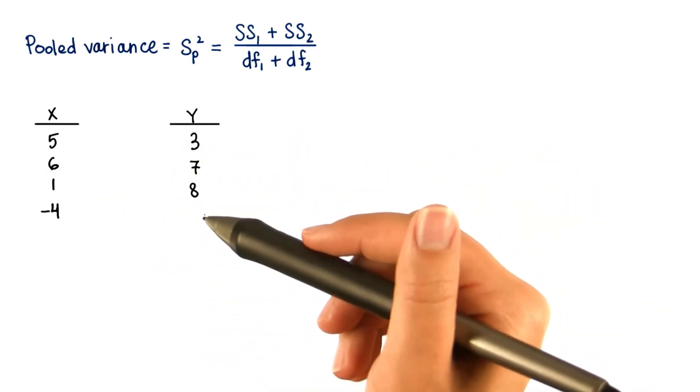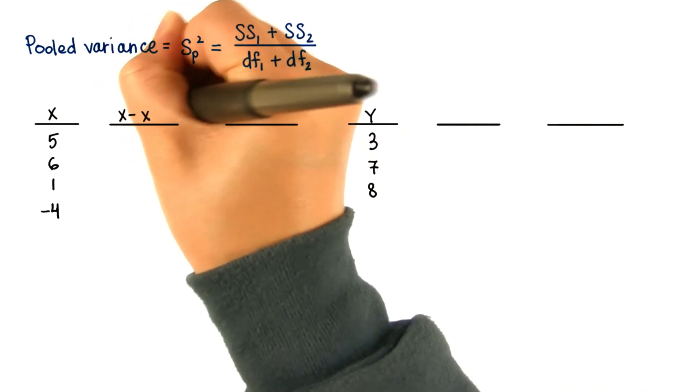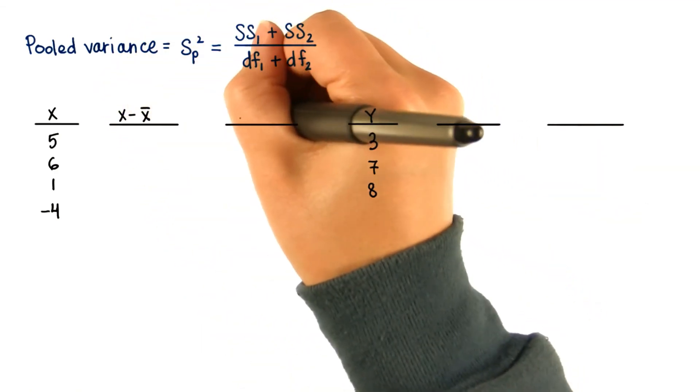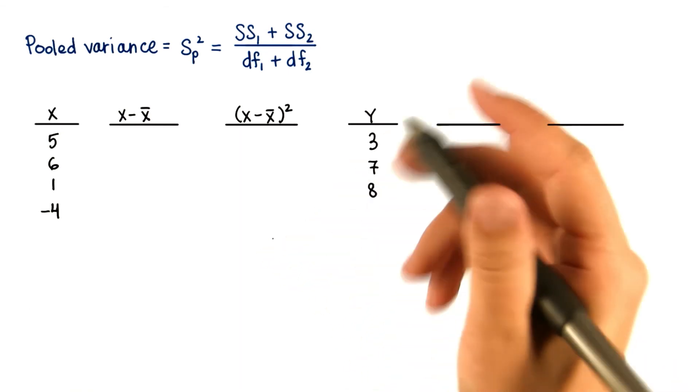First, find the sum of squares for each. Remember that to do this, you'll have to find each deviation from the mean, and then square them, and then add them up.